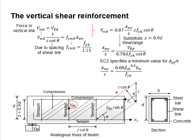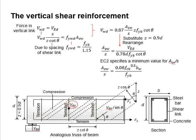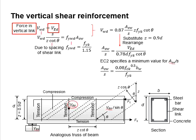The stirrup is placed at an offset distance indicated by the spacing S. To have the member adequately resist the shear force, we require the force in the vertical link to be equal to the vertical shear force.